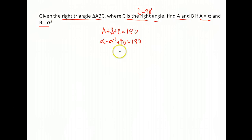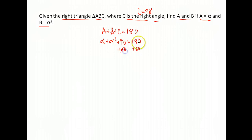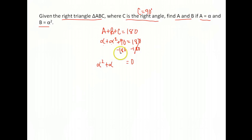Notice we have a different situation here. In past problems we combined like terms, but here we don't have any like terms on the left-hand side. Since we have an alpha squared and an alpha, we're going to have to solve this differently — we need to get everything equal to zero. Subtract 180 from both sides. Writing in standard order: alpha squared plus alpha minus 90 equals zero.